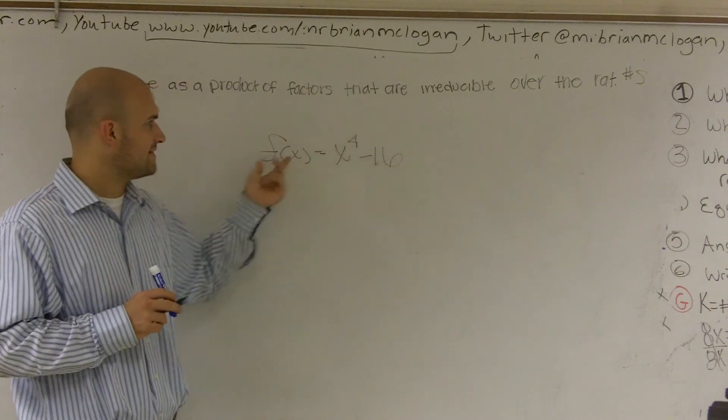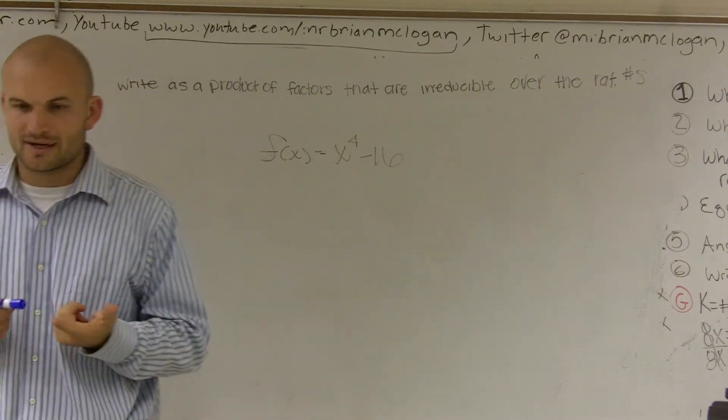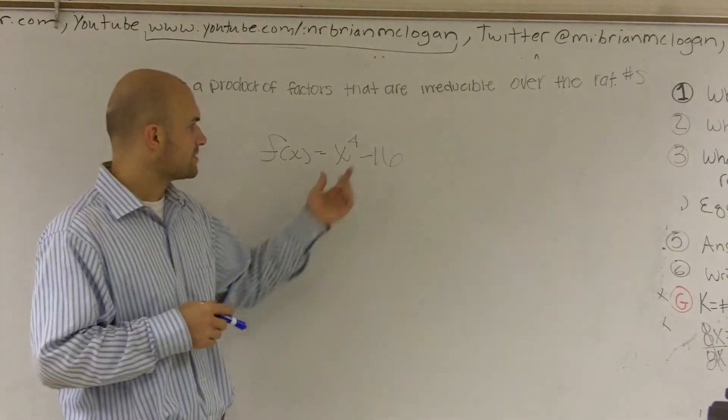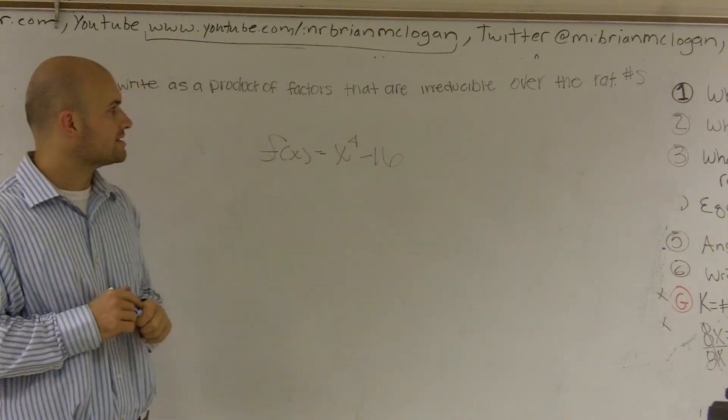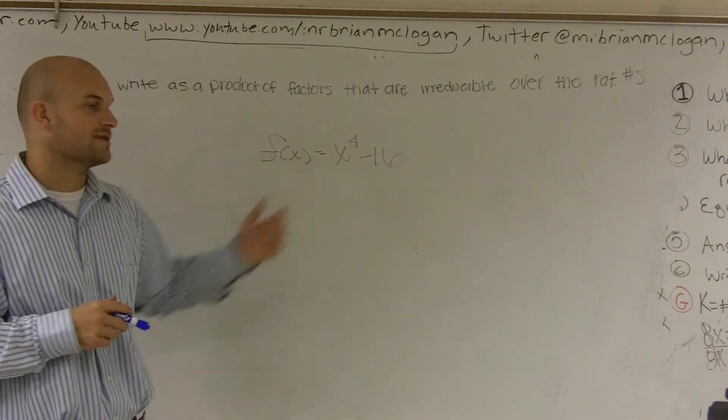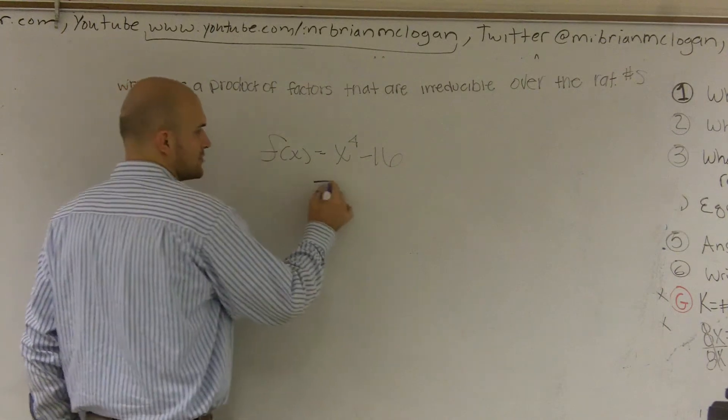I could add that 16 to the other side, but I don't really know how to find the fourth root. But what they're asking us to do is find a product of factors. So we need to write these as factors. So I need to look and say, can I write this as linear factors? And one thing I notice is I kind of have something that we'll call a difference of two squares, where I can rewrite this as x squared squared minus 4 squared.